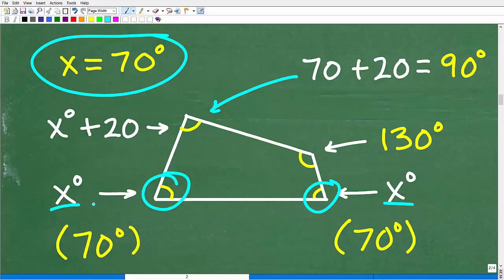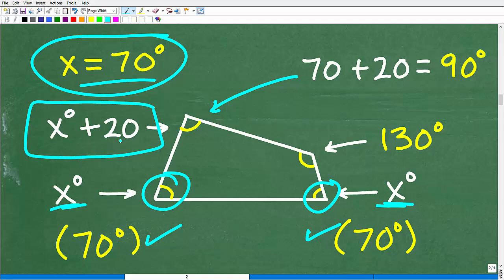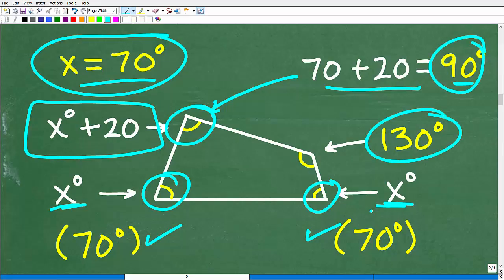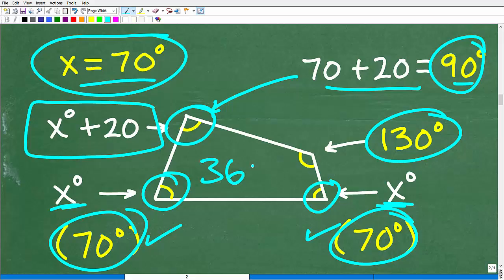The question is what is the angles of the quadrilateral? So we're going to have to go back and make sure we answer the question 100%. So x degrees and x degrees, x is equal to 70, so these two angles here are 70 degrees. And then this angle right here is x plus 20, which is going to be 70 plus 20, which of course is 90 degrees. And then of course we can just check this, right? 90 plus 130 plus 70 plus 70 will give us a sum total of 360 degrees.